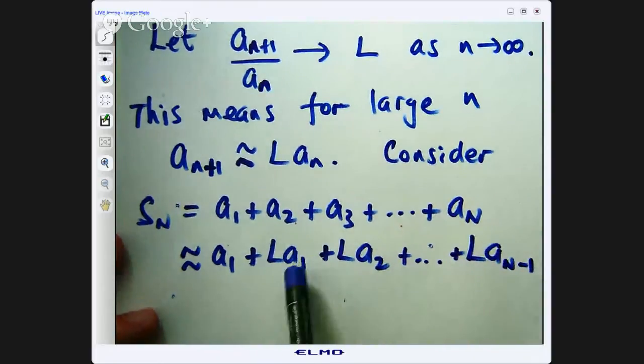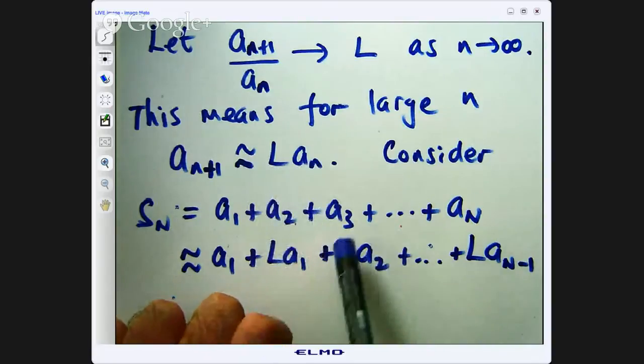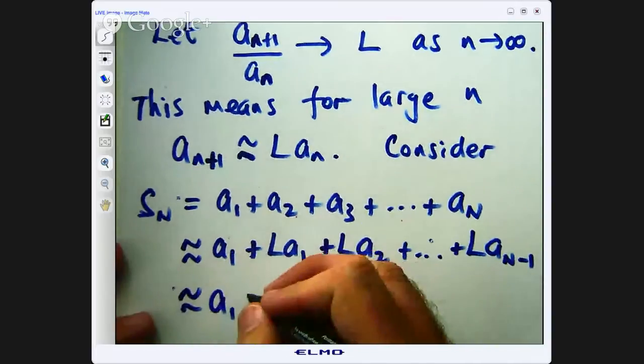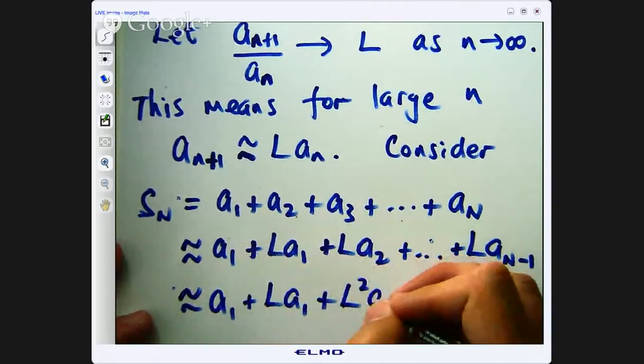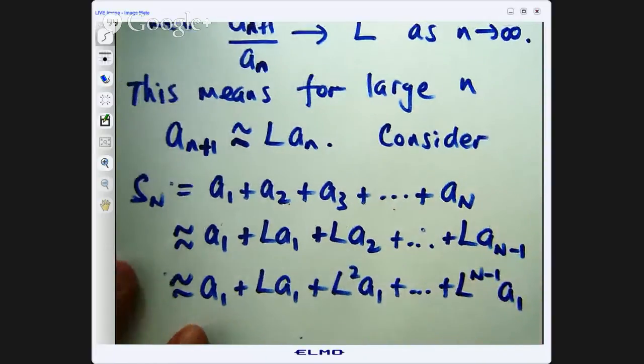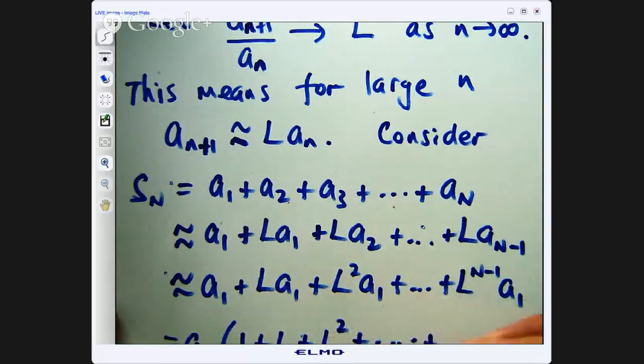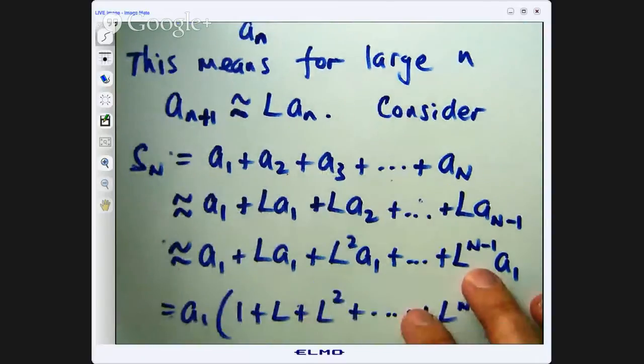So then using this expression here, I can put approximately equal sign to a sub two for n equals one. A sub two is L times a one. A sub three, putting that in there would be approximately equal to L times a sub two. And you can continue this. And then you can go back and say, all right, what's a sub one again? But a sub two, forgetting about the L, is just approximately equal to L times a sub one. So this will become L squared a sub one. And you can continue that and you get something like this. Now, notice you've got a common factor of a sub one now. And what have you got left behind? You've got a geometric sum.